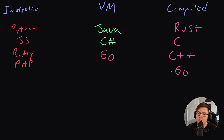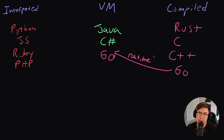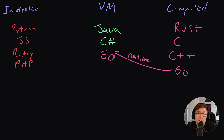That said, it is worth pointing out that a Go program tends to use much less memory than Java and C#, because there isn't a need for an entire virtual machine. Here we are at the first coding challenge. Let me break down what we are supposed to do, and then I'll explain what this code on the right actually does.